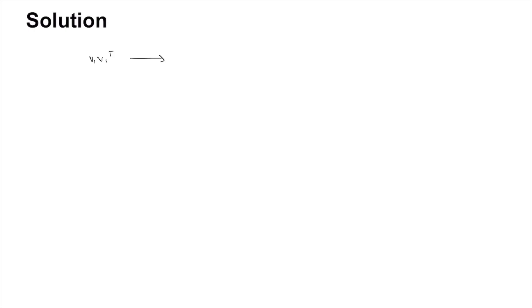Now, what can we say about v1·v1ᵀ? It is the outer product of v1 with itself. Since v1 has size 3×1, the rank of v1 is at most 1, and similarly the rank of v1ᵀ is at most 1. When multiplying two matrices, the rank of the result is at most the minimum of the ranks of the two factors, so the rank of v1·v1ᵀ is less than or equal to 1.